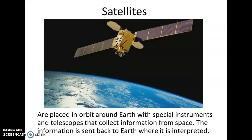Satellites — there are natural satellites such as moons, and there are also man-made satellites. Satellites are placed into orbit around Earth with special instruments and telescopes to collect information from space. That information is then sent back to Earth where it is interpreted.